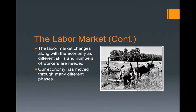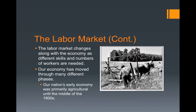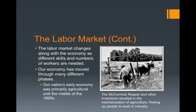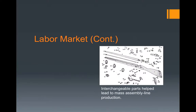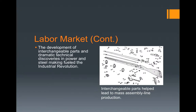Our economy has moved through many different phases. Our nation's early economy was primarily agricultural until the middle of the 1800s. That's when the McCormick Reaper and other inventions resulted in the mechanization of agriculture, freeing up people to work in an industrial capacity. The development of interchangeable parts and dramatic technical discoveries in power and steel making fueled the Industrial Revolution in the United States, which was pretty much between the middle of the 1800s into the early 1900s.